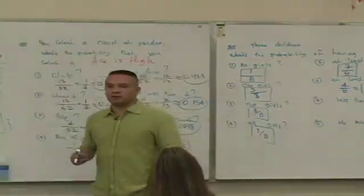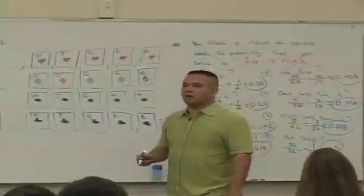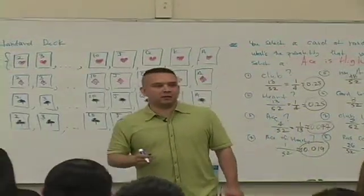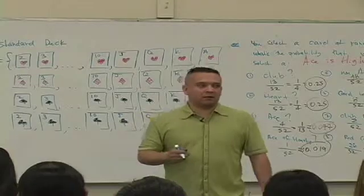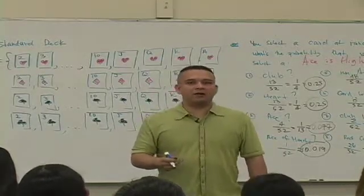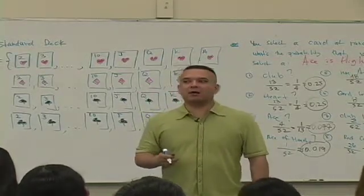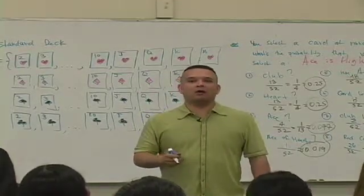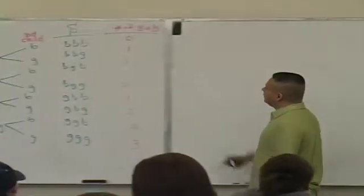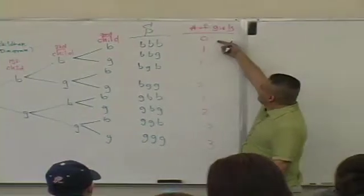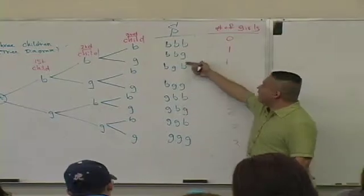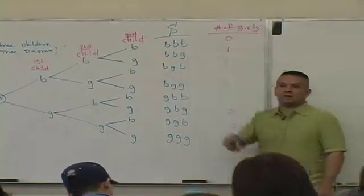Less than two. What does less than two mean? One or less — none or one. How many outcomes? Four.